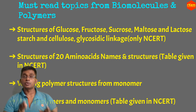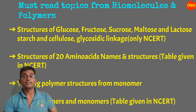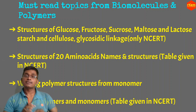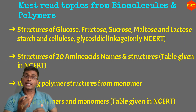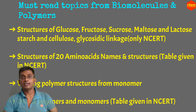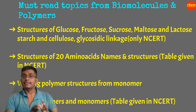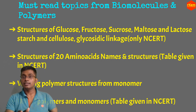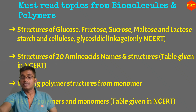What topics do you need to cover from these chapters? First, be very sure about structures and glycosidic linkages of monosaccharides, disaccharides, and polysaccharides. Know the structures of all 20 amino acids, and know how to write polymers from monomers — the table is given in NCERT. Overall, you can just read NCERT for advanced level as well; you don't need any other book.